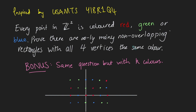What is this problem? We colour every single point in Z squared — that's a fancy way of saying every integer point on the xy plane — either red, green, or blue. We want to prove that there are infinitely many non-overlapping rectangles with all four vertices the same colour.